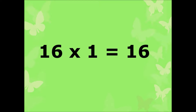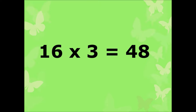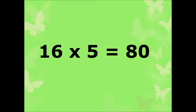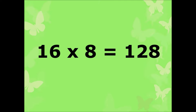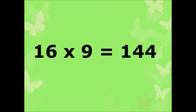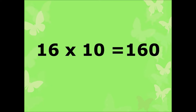16 ones are 16, 16 twos are 32, 16 threes are 48, 16 fours are 64, 16 fives are 80, 16 sixes are 96, 16 sevens are 112, 16 eights are 128, 16 nines are 144, 16 tens are 160.